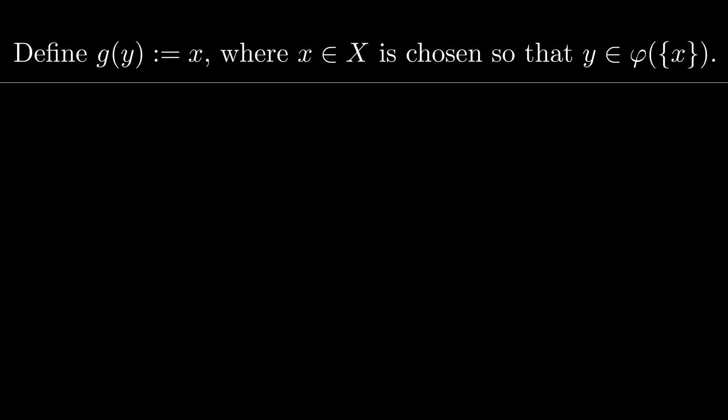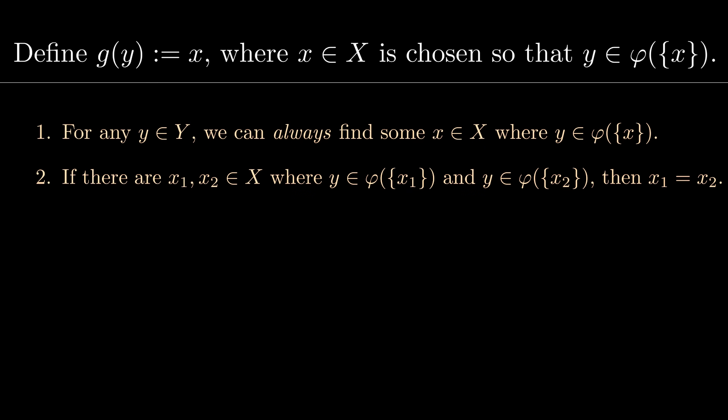First, for any element Y, we have to show that we can always find some element X where Y is in phi applied to the singleton set containing X. Secondly, if there are two elements x1 and x2 where Y lies simultaneously in phi applied to the singleton containing x1 and phi applied to the singleton containing x2, then this is only possible if x1 equals x2.